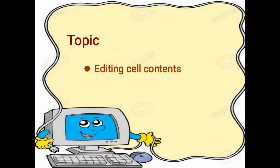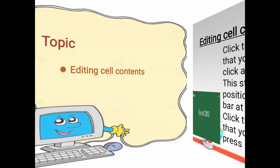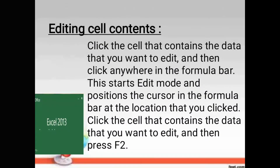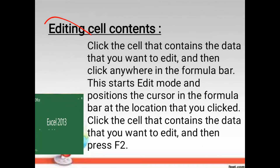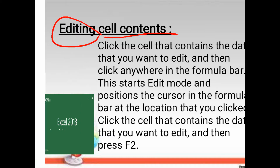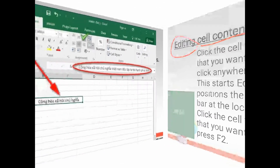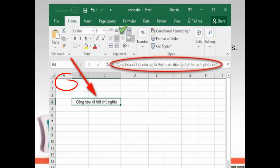Now we are talking about editing cell contents. Editing means any kind of thing to renew or change. Editing cell contents means there are cells inside an Excel sheet. The smallest unit of Excel is called a cell.